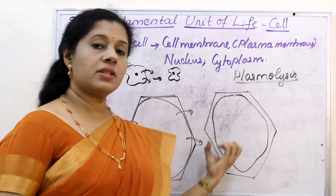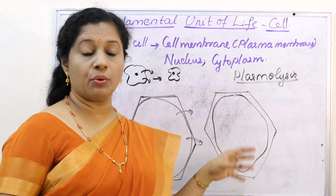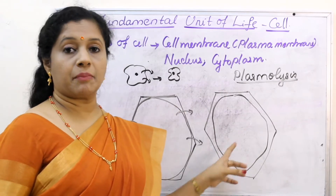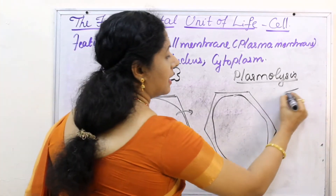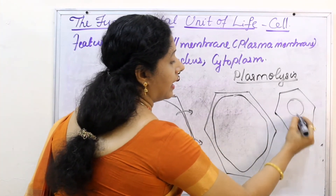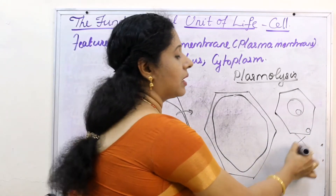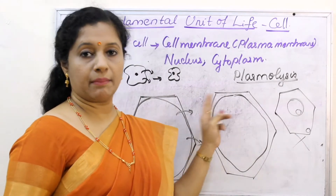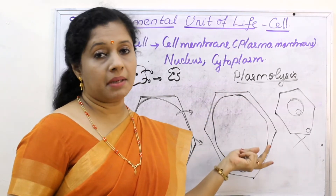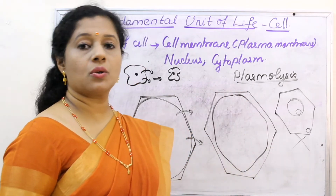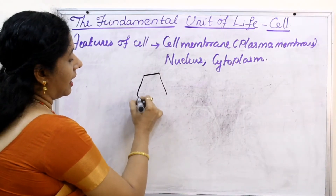The contents of the cell withdraw from the cell wall when placed in a hypertonic solution due to exosmosis — that process is called plasmolysis. If you continue like this, the contents keep shrinking and finally the cell will die as all the water has gone out. But in this situation, if you provide water or place it back in a hypotonic solution, the cell can again become completely filled. This process is called plasmolysis — and it is reversible.